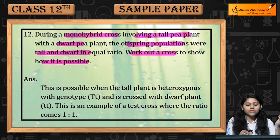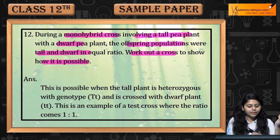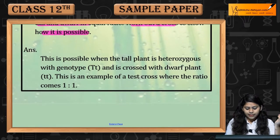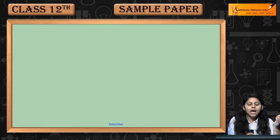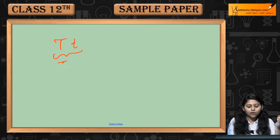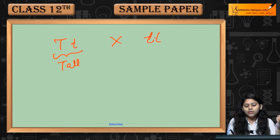We'll do a test cross with the recessive one. This is only possible if the parent is heterozygous. Tall है, heterozygous. Dwarf के साथ इसे cross करेंगे.